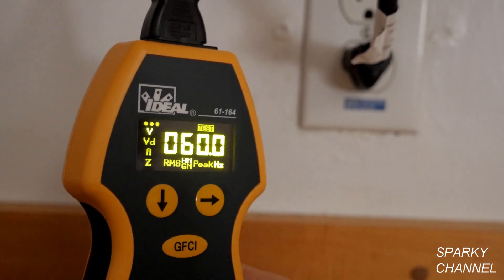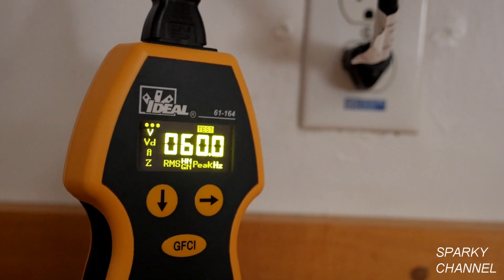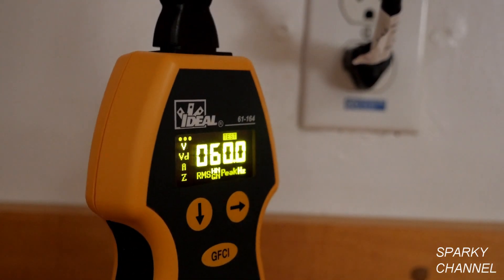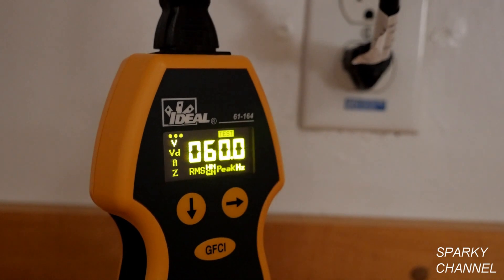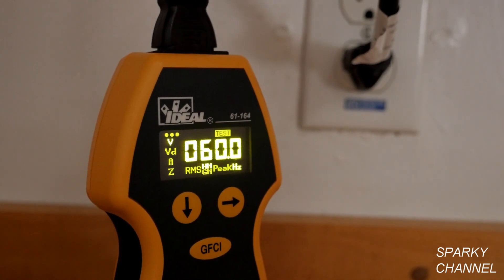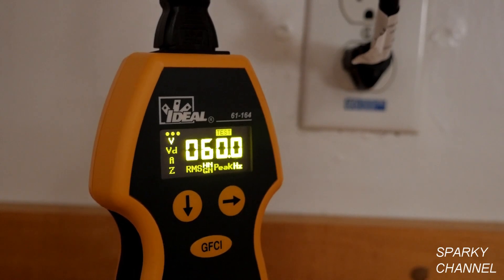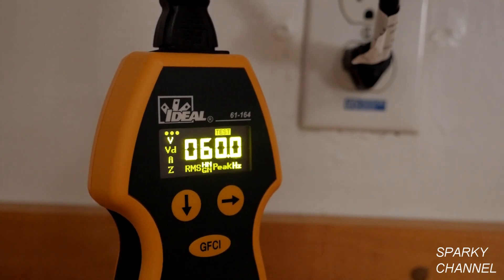Now the next test, we'll test Hertz. Here in the United States, the Hertz should be 60. If it doesn't say 60, then you would need to contact your provider and find out what's wrong. Other countries have different Hertz, like Australia is 50 Hertz.